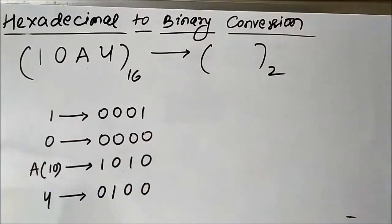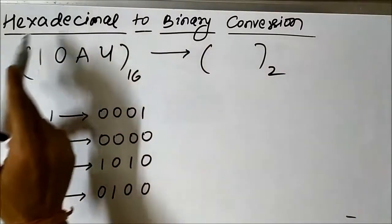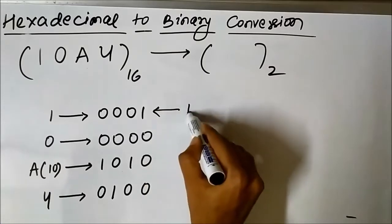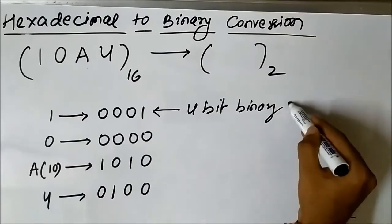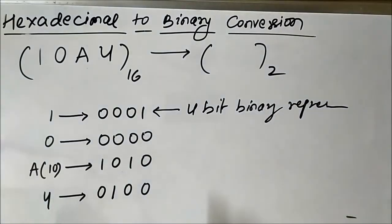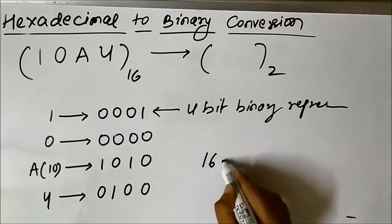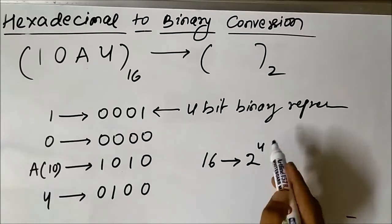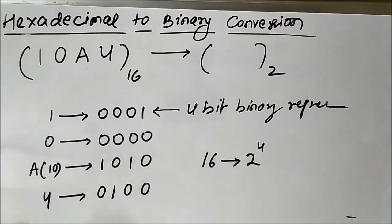Here we have represented each of the hexadecimal symbols in the number 10A4 in terms of 4-bit groupings or 4-bit binary representations. The reason we use 4 bits is that a total of 16 symbols are available in the hexadecimal number system, and 16 is equal to 2 to the power 4, so we require 4-bit groupings of binary numbers to represent each of the 16 symbols.